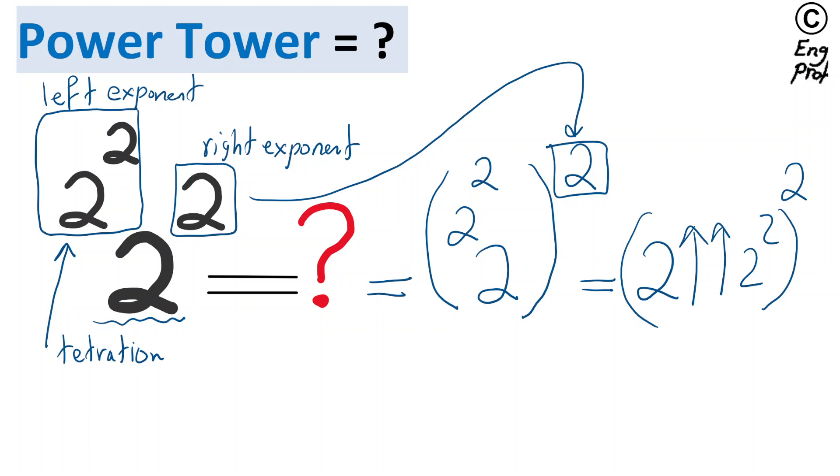This basically means that, let's compute this, which is 2 to the power 4. So effectively this whole thing is 2 to the power left exponent 4, or tetrated to the 4, to the power 2.